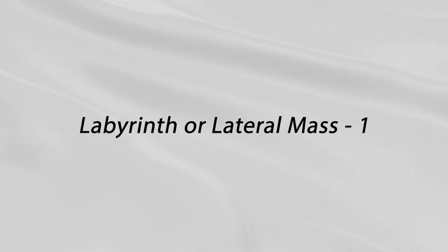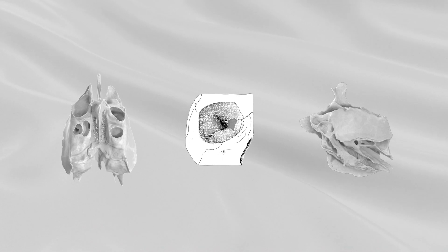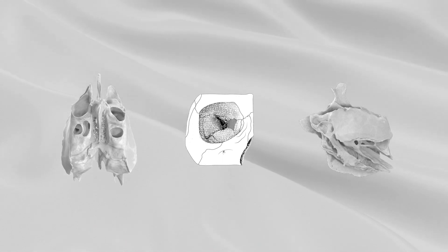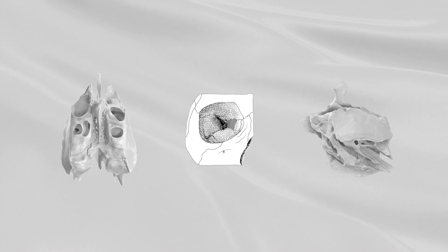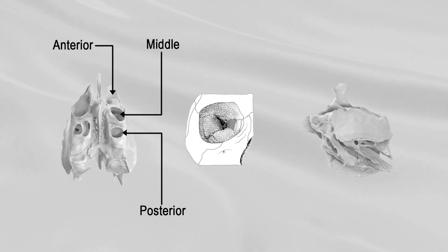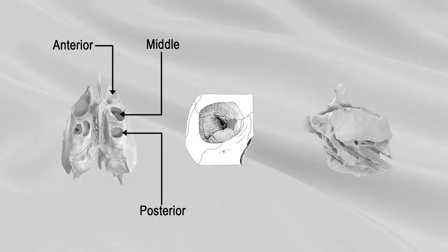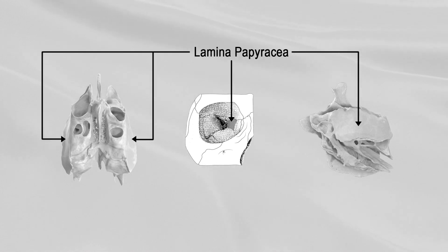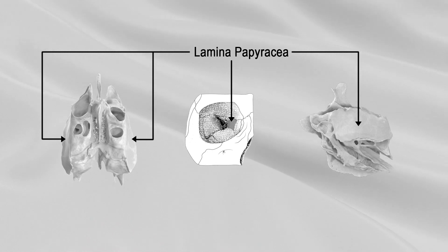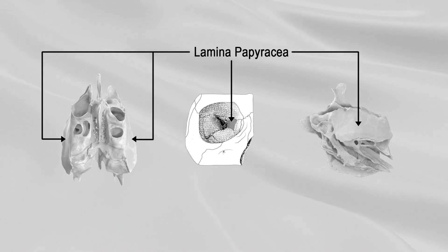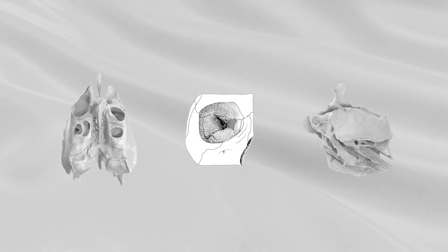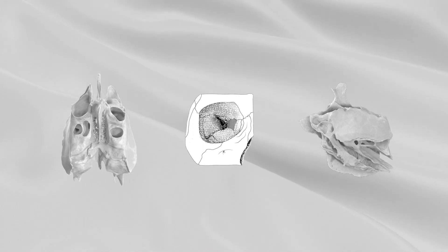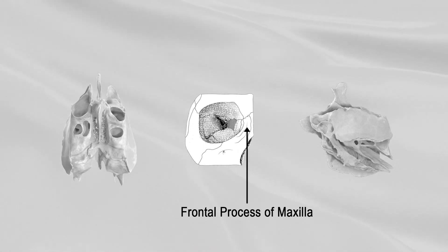Labyrinth or lateral mass. The labyrinth or lateral mass consists of several thin-walled cellular cavities, the ethmoidal cells, that are arranged in three groups: anterior, middle, and posterior. They are interposed between two vertical plates of bone. The lateral surface, or lamina papyracea, is a thin, smooth, and oblong plate, which forms part of the medial wall of the orbit and covers in the middle and posterior ethmoidal cells. In front of the lamina papyracea, the air cells are overlapped and completed by the lacrimal bone and the frontal process of the maxilla.